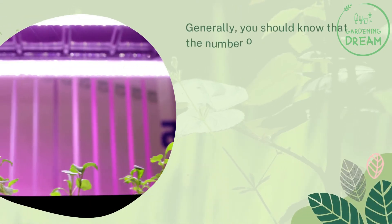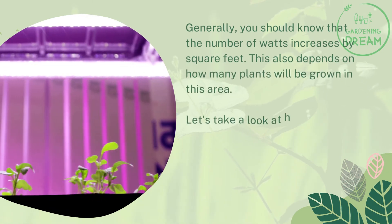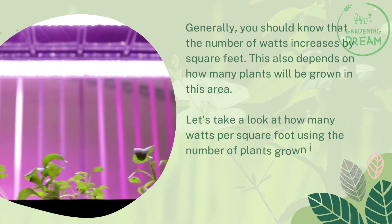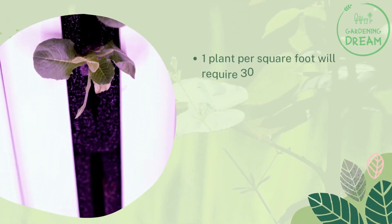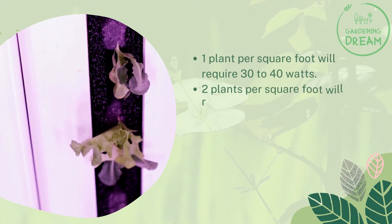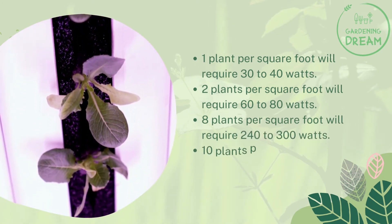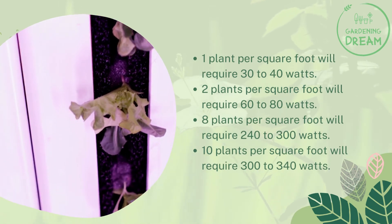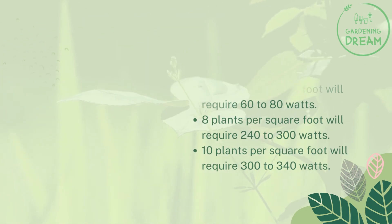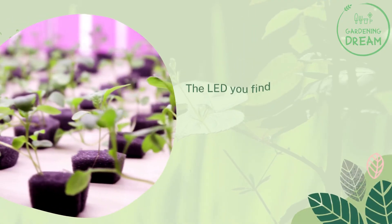Generally, the number of watts increases by square feet, and this also depends on how many plants will be grown in the area. Here's how many watts per square foot using the number of plants: 1 plant per square foot requires 30–40 watts; 2 plants per square foot require 60–80 watts; 8 plants per square foot require 240–300 watts; 10 plants per square foot require 300–340 watts.